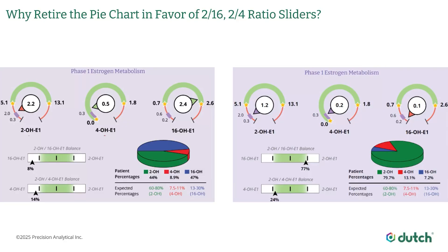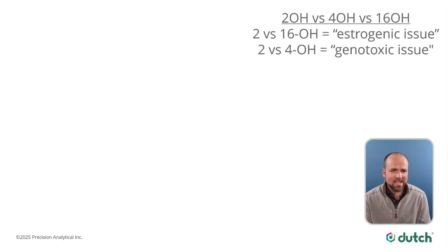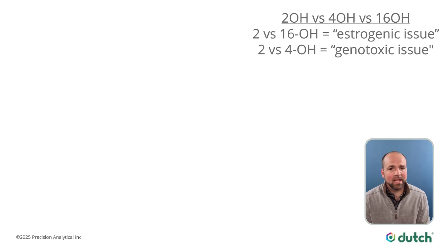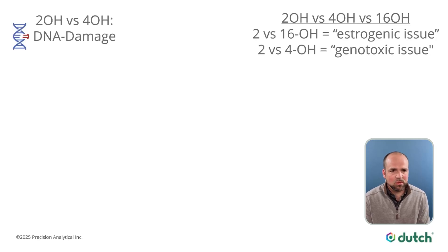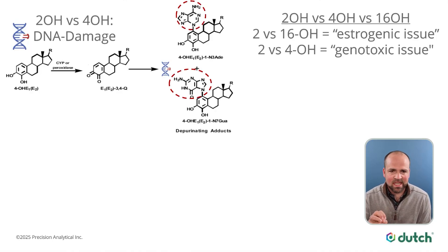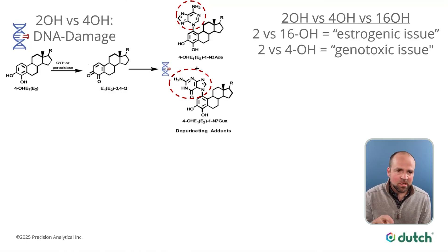Let me show you the science of this. The two hydroxy and the 16 hydroxy are essentially competing for each other in an issue that has to do with the estrogenicity of these metabolites. 16 hydroxy is estrogenic, but the four hydroxy is not very estrogenic — but it can be genotoxic, meaning it's actually doing DNA damage, and the two hydroxy is competing with it in a protective way. The four hydroxy creates this reactive quinone, and then it breaks a piece of DNA off. You see that little red piece of the DNA which becomes attached to the four hydroxy, and that is its genotoxic potential.